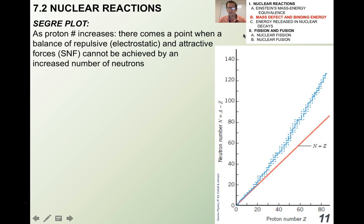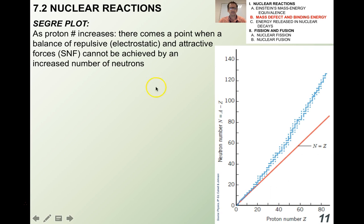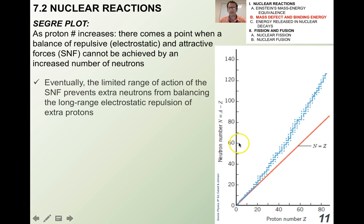You have to be familiar with something called the Segré Plot. On the x-axis we have the proton number, and on the y-axis we have the neutron number. It shows the ratio of the neutron number to the proton number. As the proton number increases, there comes a point when the balance of repulsive and attractive forces — electrostatic and strong nuclear — cannot be achieved by an increased number of neutrons. The red line indicates where n equals z.